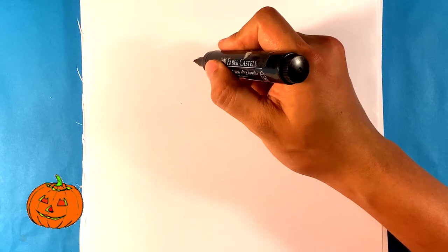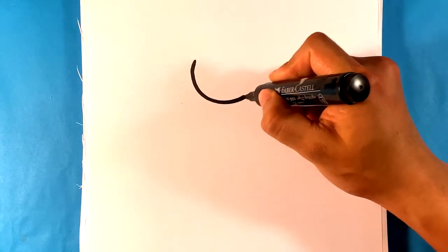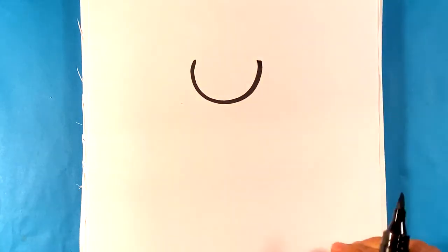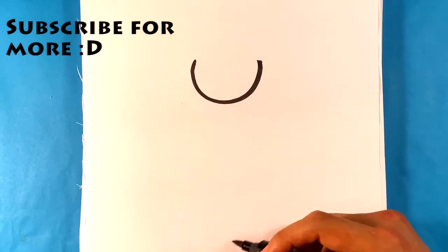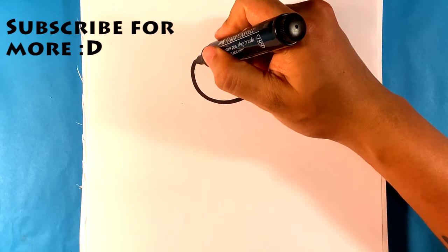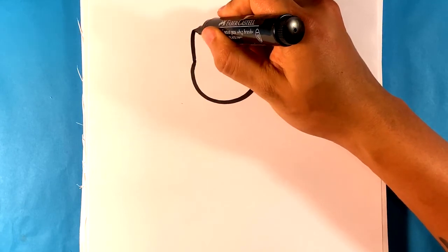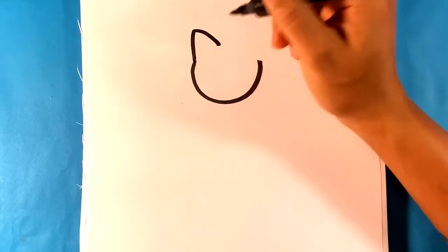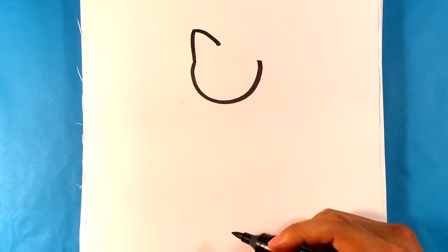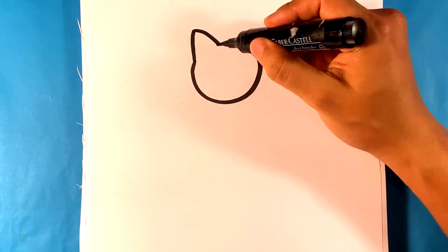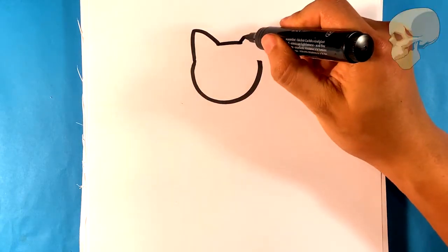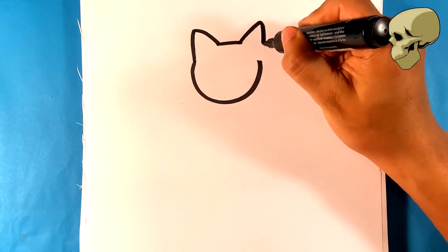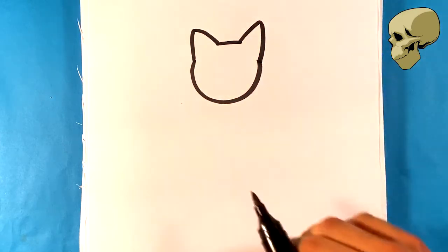First thing I'm going to do is I'm going to start with a round shape for the bottom of the cat's head. Then I'm going to go up, kind of a soft part of a triangle there for the ear. Line across.